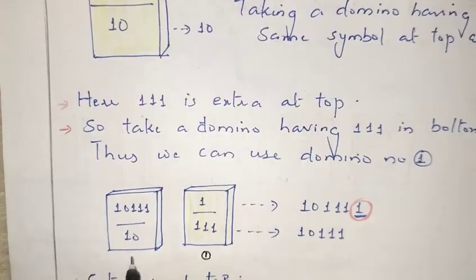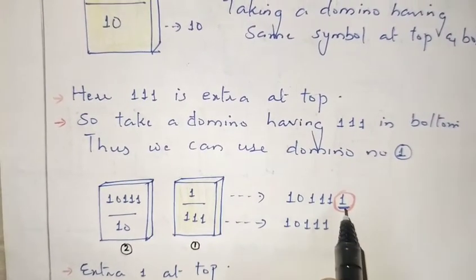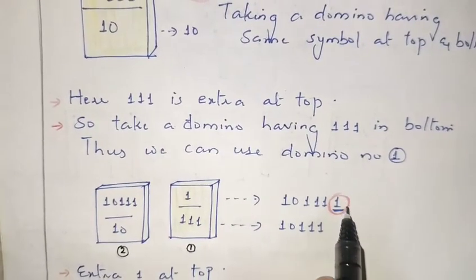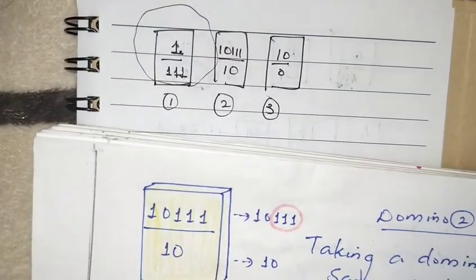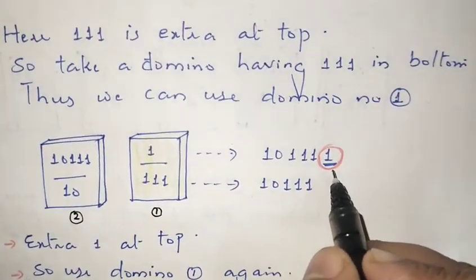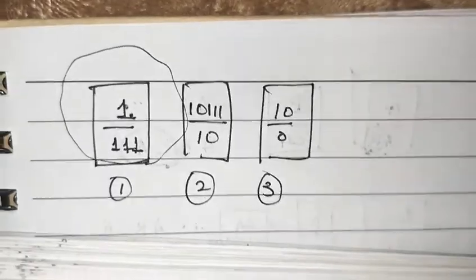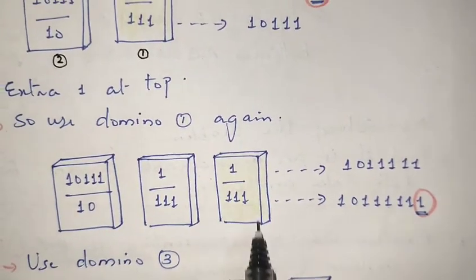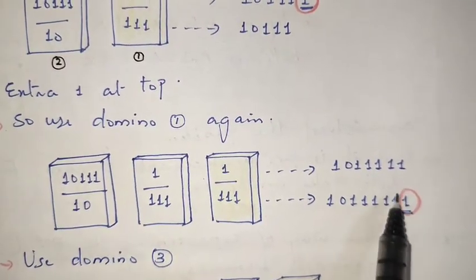To match the extra '111' in the denominator, I select domino one, which has '111' in the denominator. After combining dominos two and one, the top gives one string and the bottom gives another, with one extra symbol in the top. I need a domino with '1' in the denominator — I can select domino one again. We can reuse the same domino more than once, which is allowed.